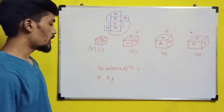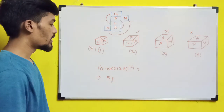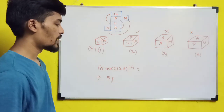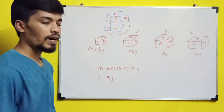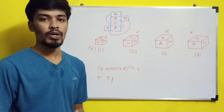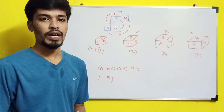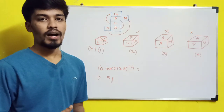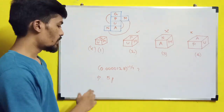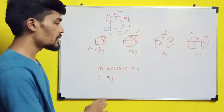The next question was a simplification: 0.000128 to the power of −1/7. You can use the built-in calculator for this. The answer works out to 5.